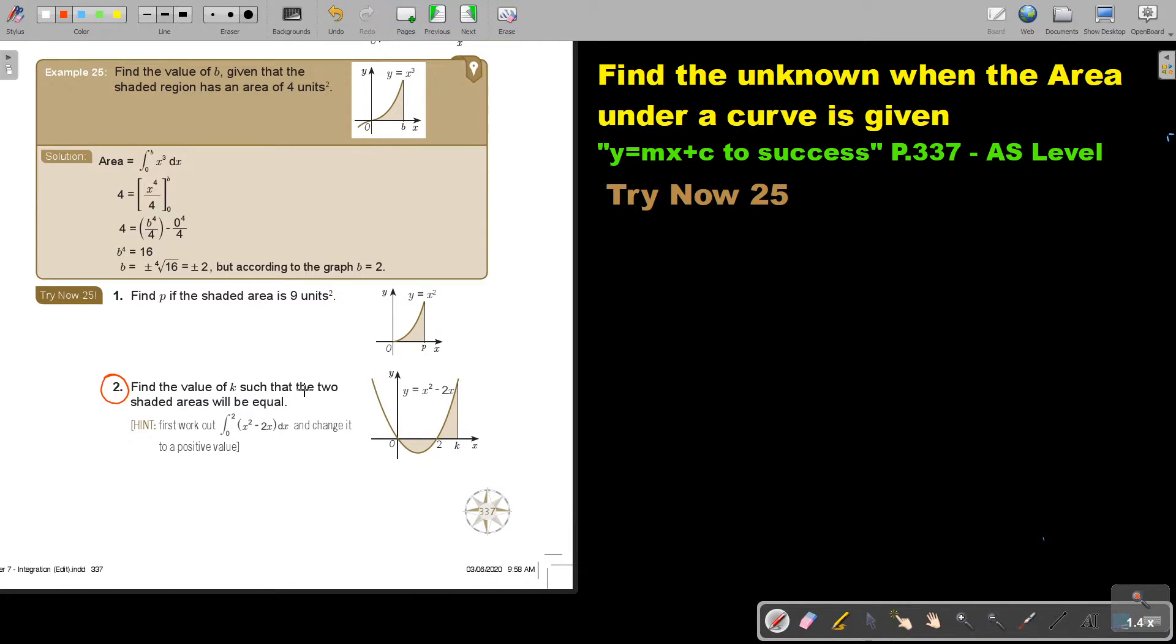Let's start. Find the value of K such that the two shaded areas will be equal. Very important. So this one will be equal to this one. Here I have all the information. Here I have the anode. But it's the same function. So let's first find this one's area. And then just change it to a positive. And then we can work with that to find this one's area.